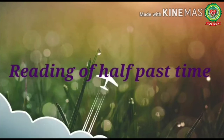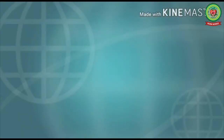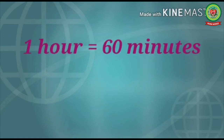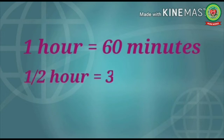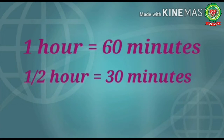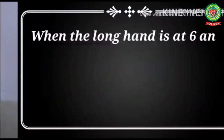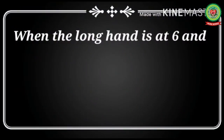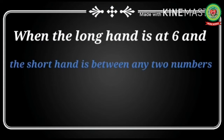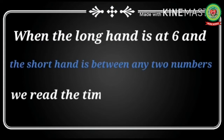Now let's start today's topic. Before starting I'll tell you a basic fact about half past time. We have already learned that one hour has 60 minutes. So what is the half of 60? — 30. It means half an hour has 30 minutes. When the minute hand has moved halfway around the clock the time is half past the hour. When the long hand is at 6 and the short hand is between any two numbers, we read the time as half past the hour.